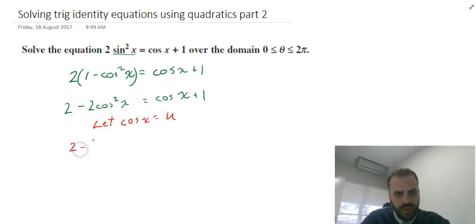2 - 2u² = u + 1. A u squared, a u, and some constants. If I rearrange this, I'm going to end up with 0 = 2u² + u - 1.